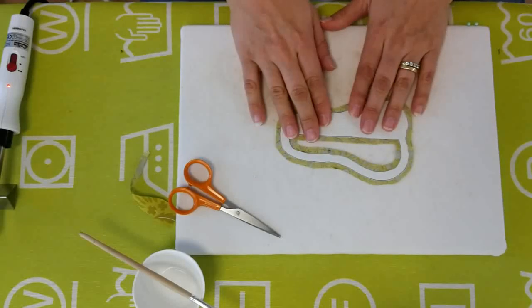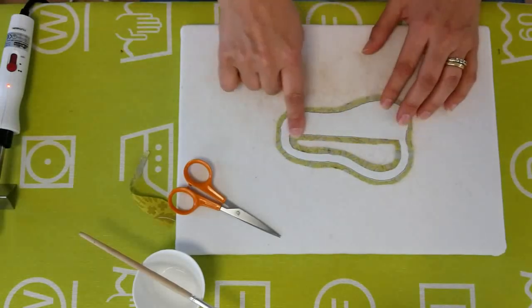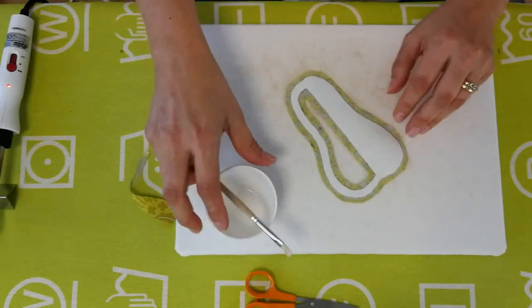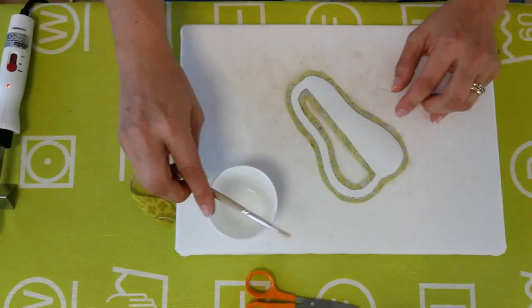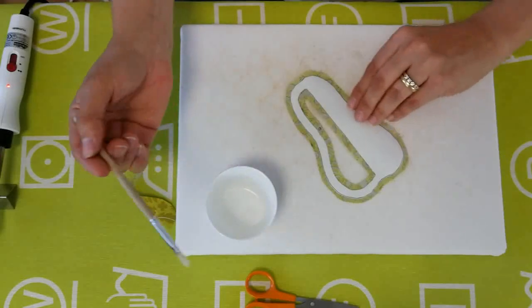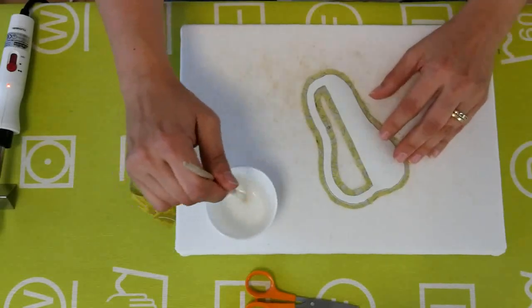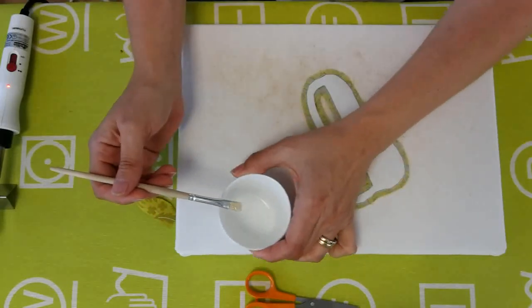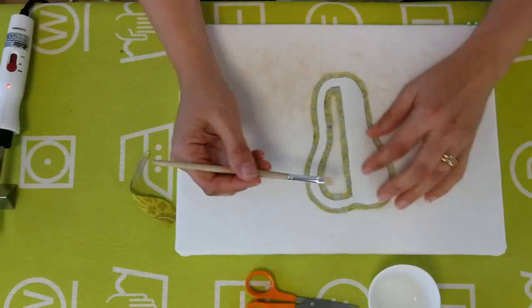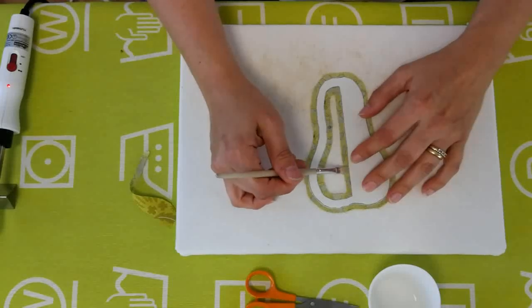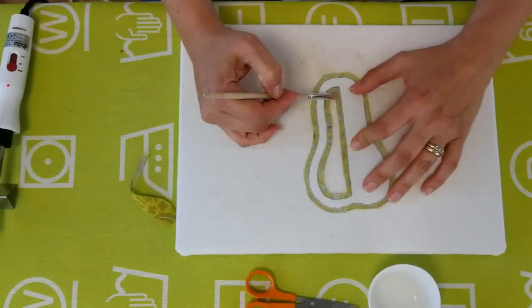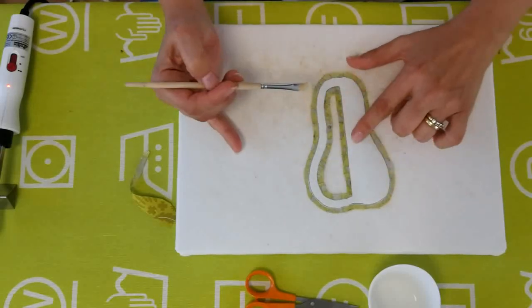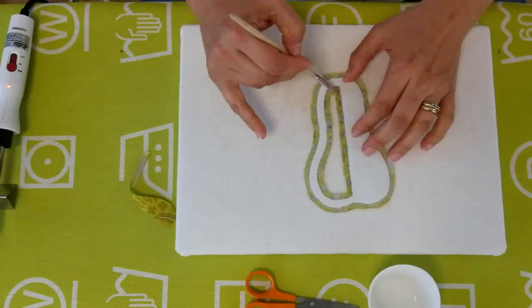When you're doing starch applique, you always need to start on the straight side of your block. I have my special bowl here with a little bit of curve so that my paintbrush doesn't roll away. I'm going to get started by just getting a little bit—you don't need to soak your brush—a little bit of starch on your brush, and you begin to paint it on. The important thing is that you don't paint onto the shape like I just did.